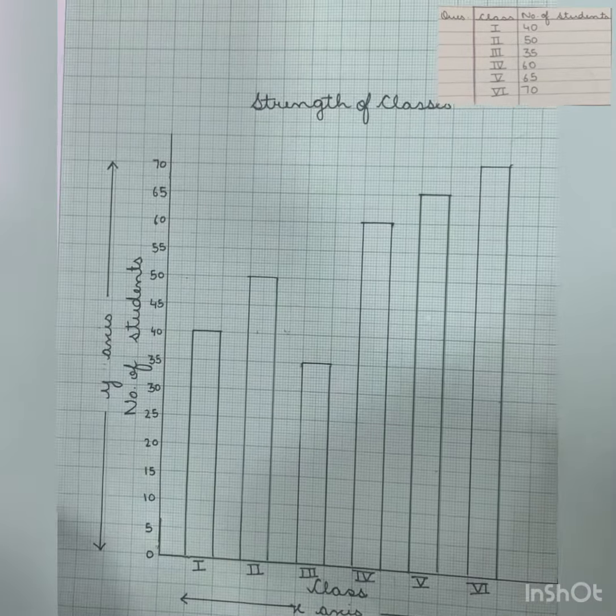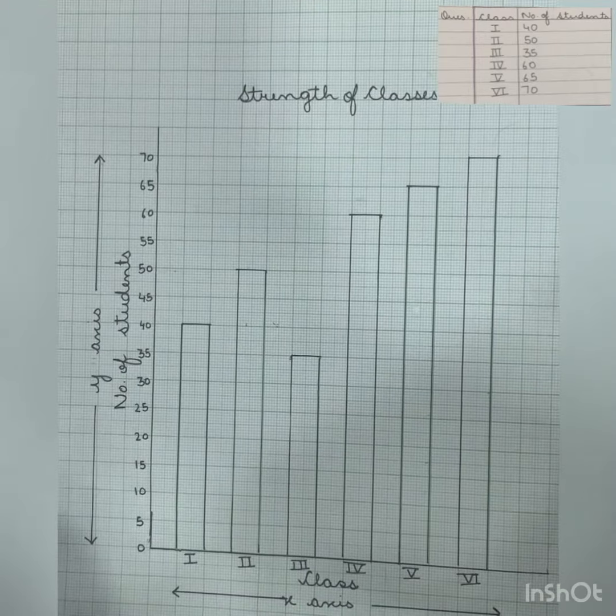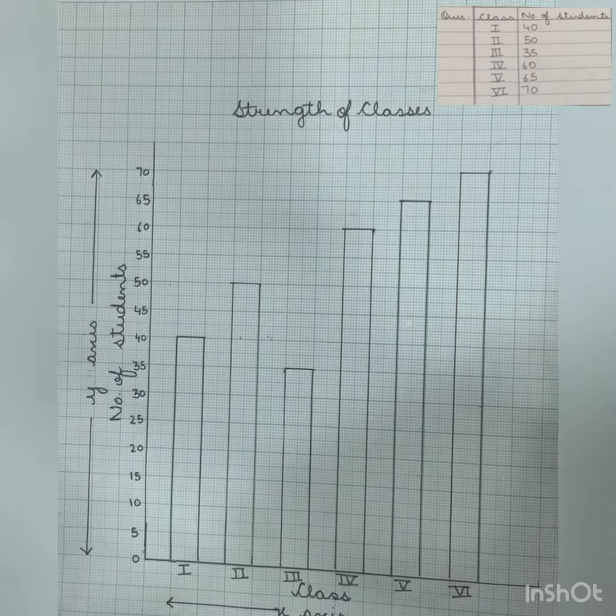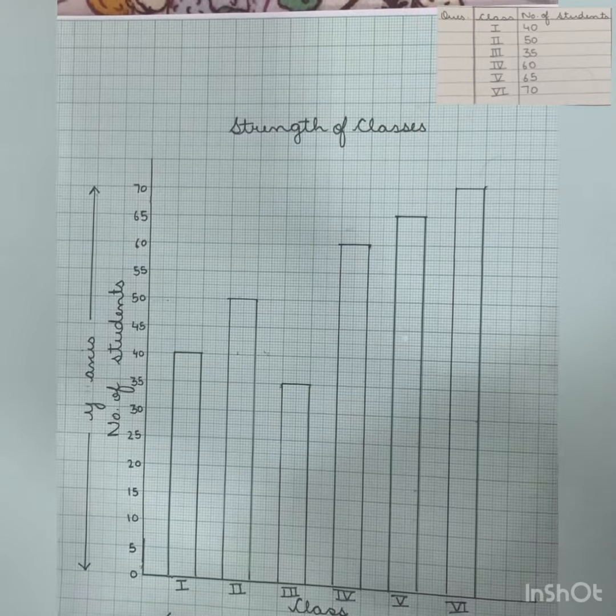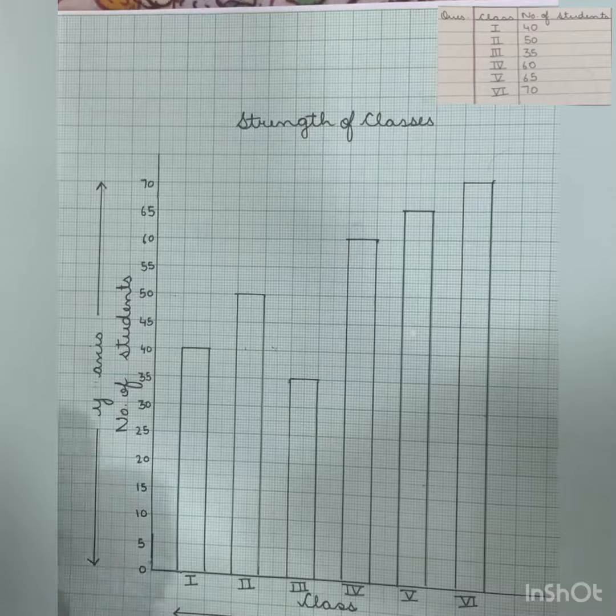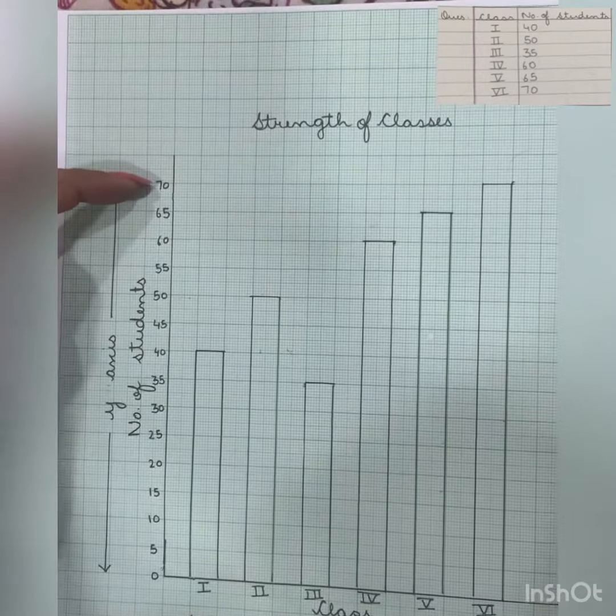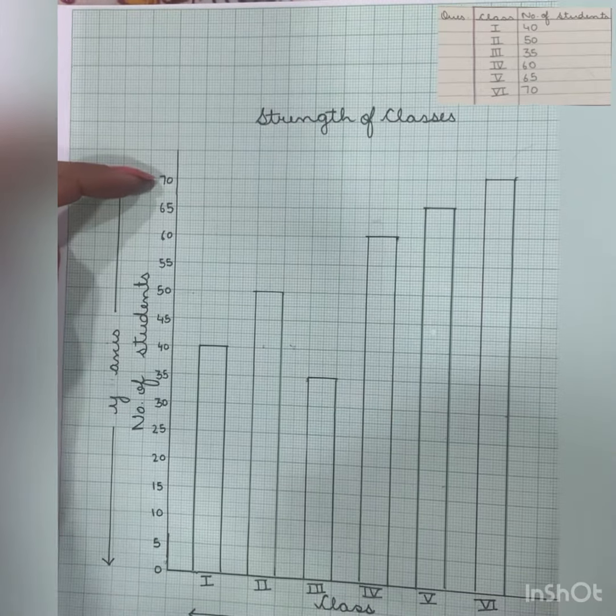So we have taken the scale, the range from 0 to 5, 5 to 10, 10 to 15. We can't draw 1, 2, 3, 4, 5, 6, 7, 8 until we have last 70. Our range is up to 70, our maximum number is up to 70.